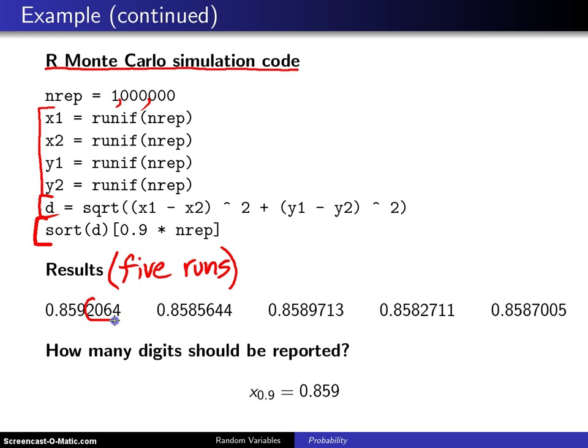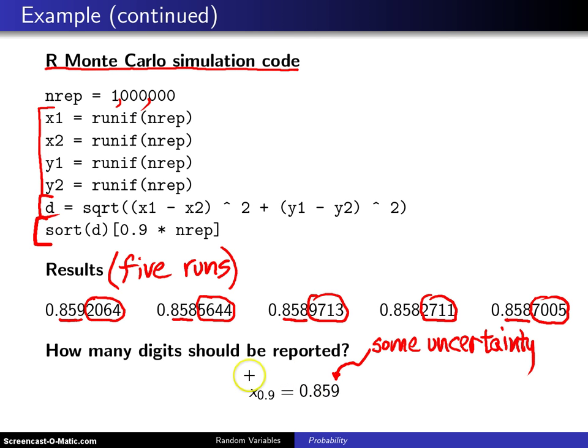You can see if you look at these four rightmost digits, they are pretty much noise. But if you look at the first three, you got 859 here, this rounds to 859, this rounds to 859, this rounds to 859, this one here rounds to 858. So you could report 0.859, but just indicate that there is some uncertainty with that last digit as you report your Monte Carlo estimate of the 90th percentile of those distances.